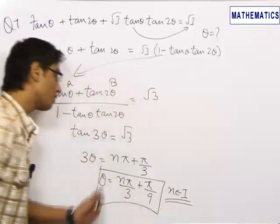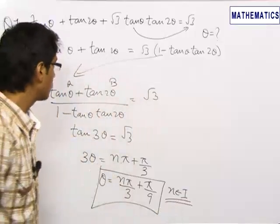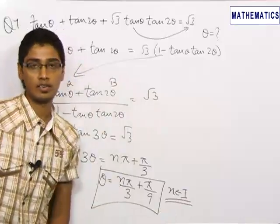So, θ is equal to nπ by 3 plus π by 9. The general values of θ satisfying the given equation is θ equals nπ by 3 plus π by 9.